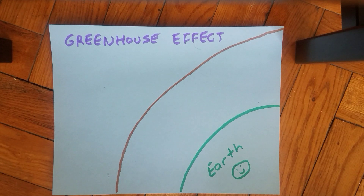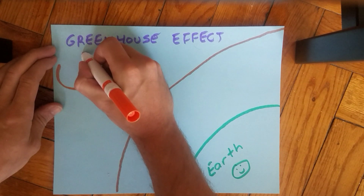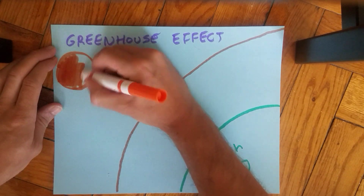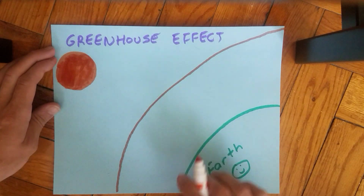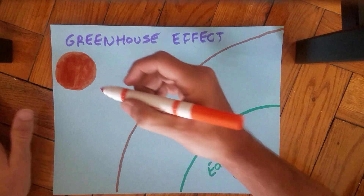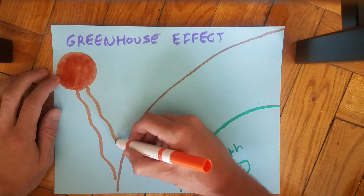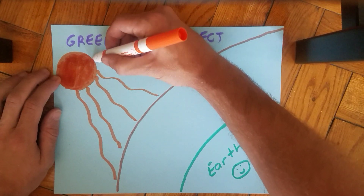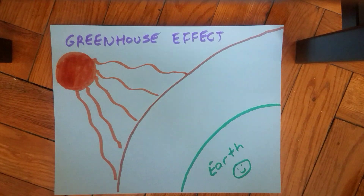What happens during the natural greenhouse effect is the sun is a constant source of heat-bearing light. The amount of light that is emitted towards the earth is constant — this is an important concept. What isn't constant is our behavior.